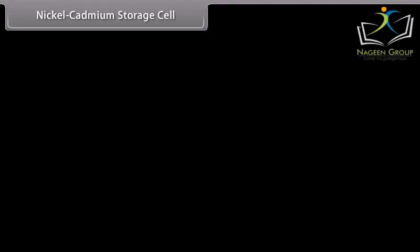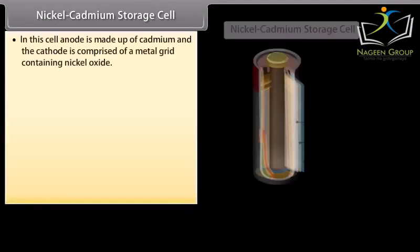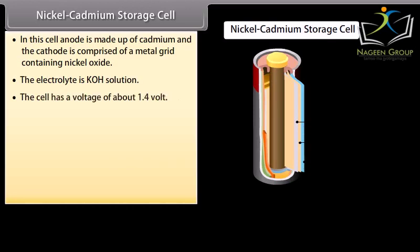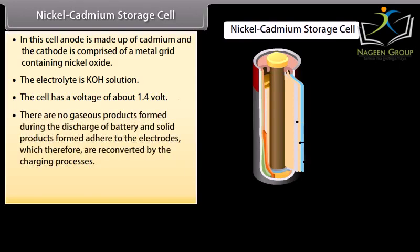Nickel cadmium storage cell. In this cell, anode is made up of cadmium and the cathode is comprised of a metal grid containing nickel oxide. The electrolyte is KOH solution. The cell has a voltage of about 1.4 volts. There are no gaseous products formed during the discharge of battery and solid products formed adhere to the electrodes which therefore are reconverted by the charging processes. These cells are extensively used in electronic watches and calculators.